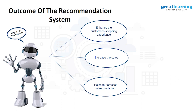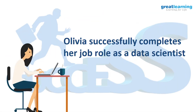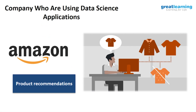So Olivia has successfully completed her job as a data scientist. She first understood the business problem, then performed data acquisition and collected the data, then cleaned the data, then understood the hidden patterns in her data, then applied machine learning algorithms wisely, and arrived at a proper solution. This is the whole scenario of a data scientist. If you want to be a data scientist, this will be your job. I hope you understand what the job of a data scientist is and what processes are involved.